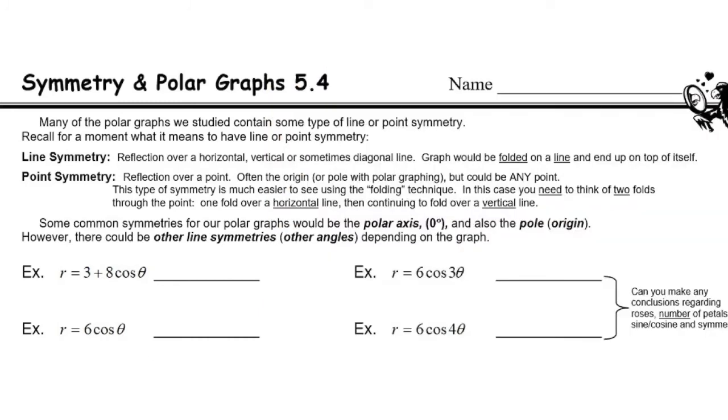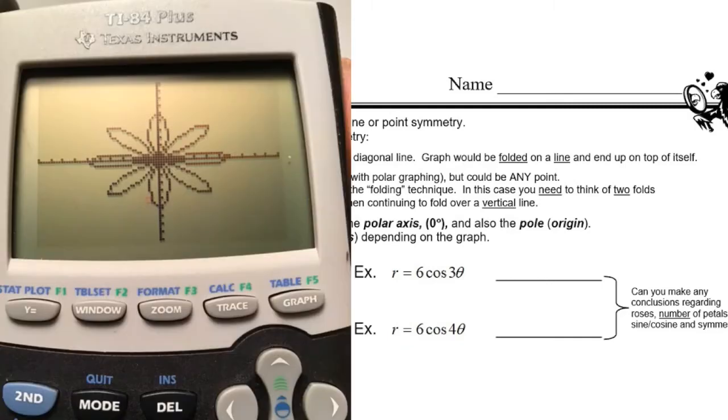And then 6 cosine of 4 theta. Did you predict what that would be? It's once again in the form of a rose. This rose has an even n value, so it's hopefully not a surprise that we end up with 8 petals. We learned that there's going to be a line of symmetry that goes through the center, that goes through the middle of these petals. But we can find the value of those lines by tracing to the tip of these petals. If we trace to the tip of these petals by advancing the cursor to the right, we shouldn't be too surprised that we're ending up with values that are in increments of 45.